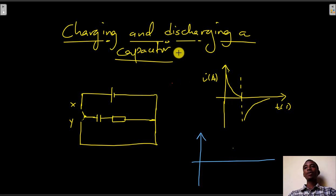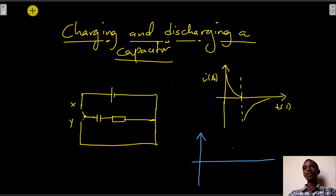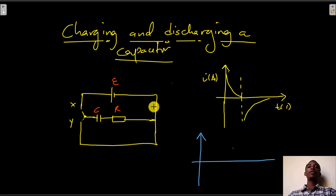In this video, I'm going to talk about charging and discharging a capacitor through a CR circuit. So on the screen here, I have a CR circuit with a capacitor of capacitance C, a resistor R, and a battery of EMF epsilon.